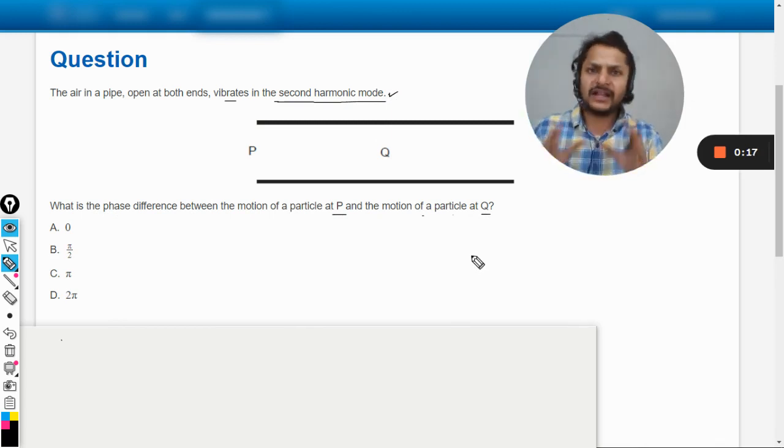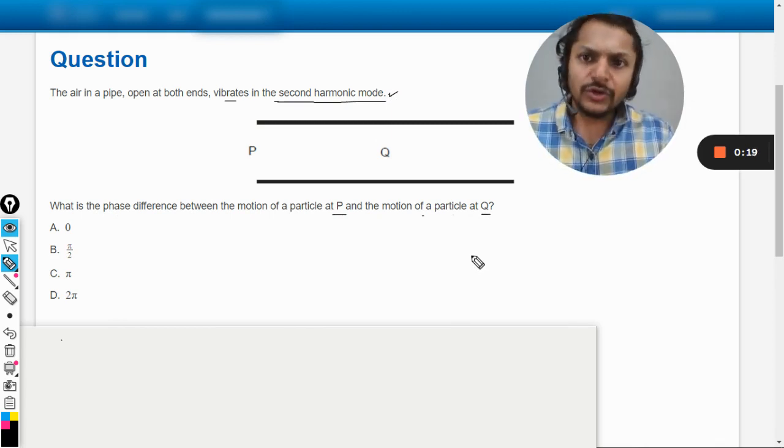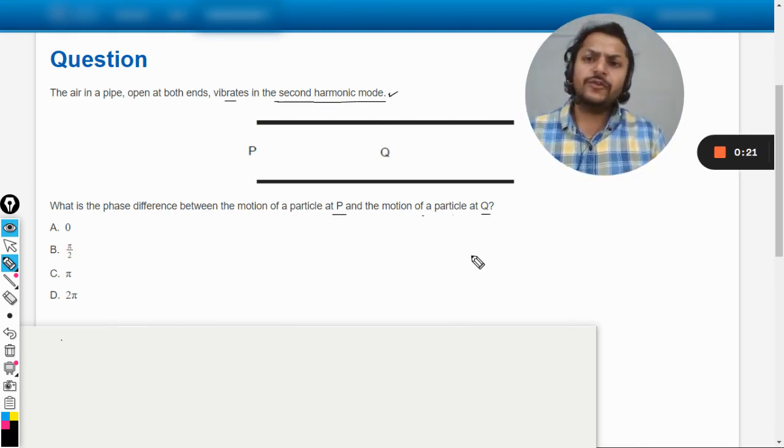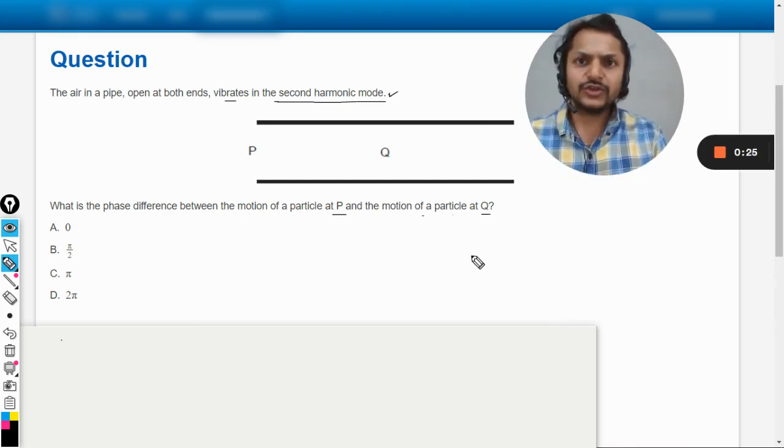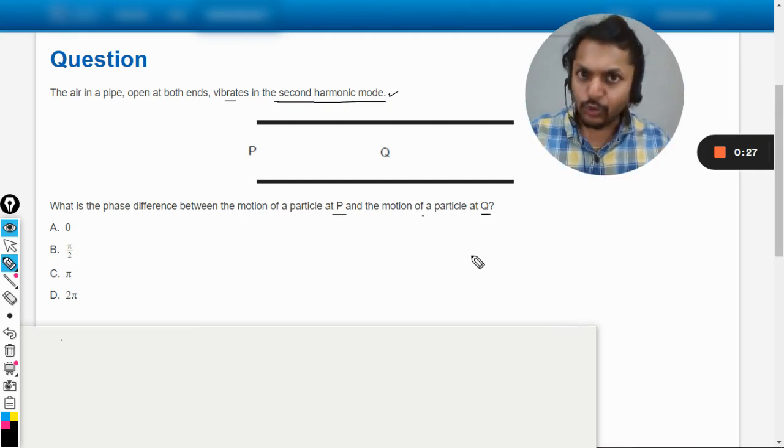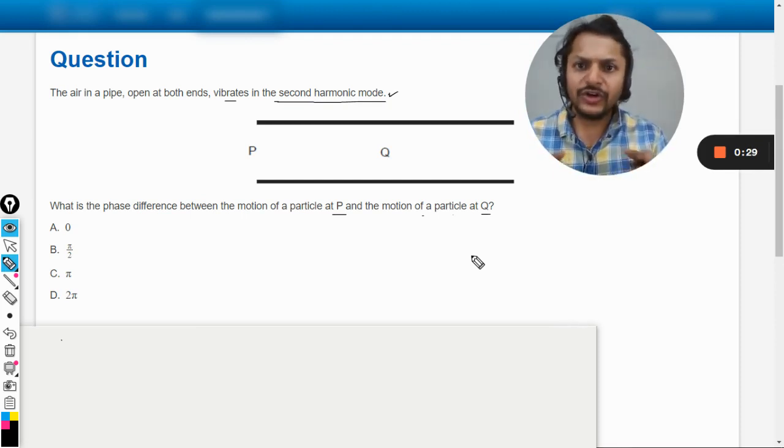So we can do this question if you remember how to draw the second harmonic in the case of a pipe which is open at both ends. So how are you going to create the second harmonic?